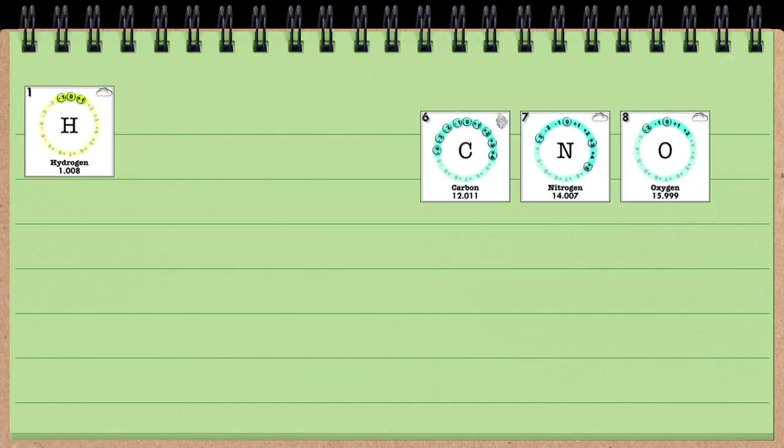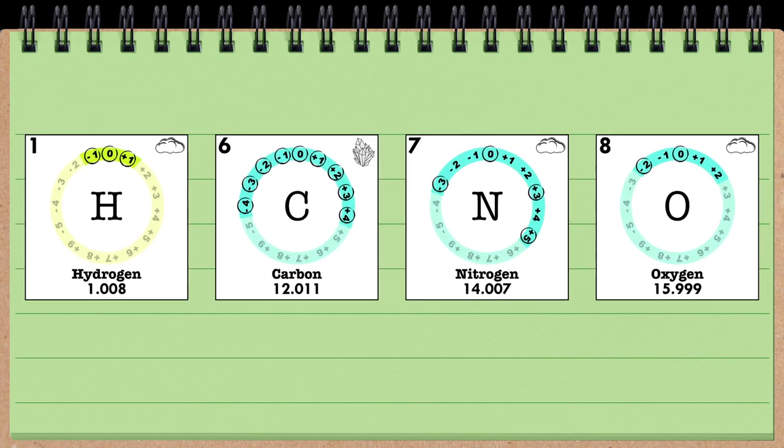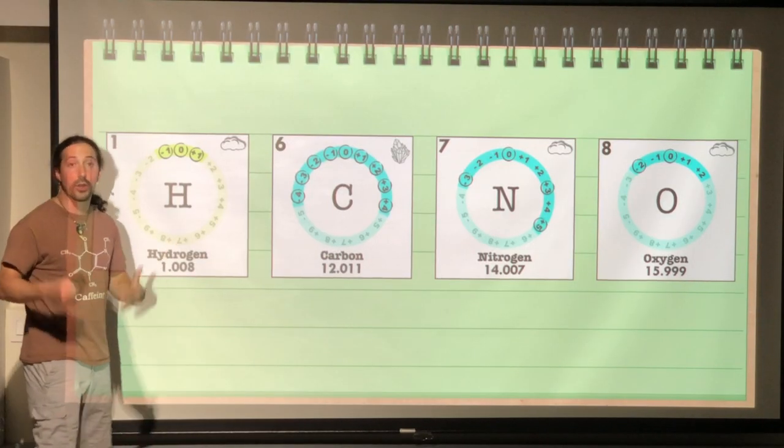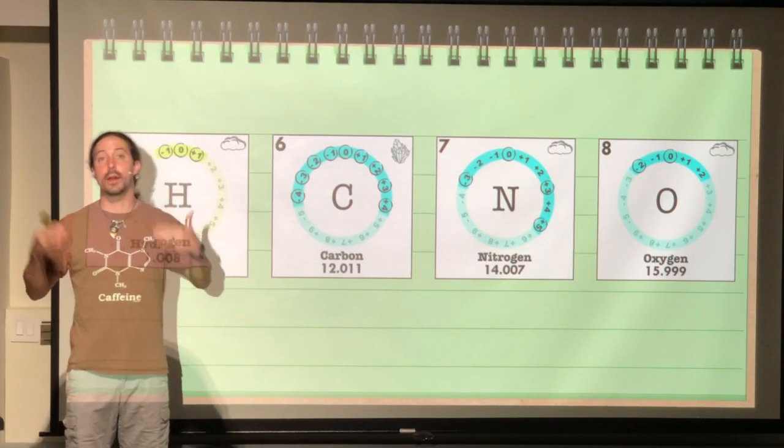And the four elements that we're concerned with are hydrogen, carbon, nitrogen, and oxygen. As it works out, hydrogen, as we said earlier, it only has one proton, which also means it has one electron.